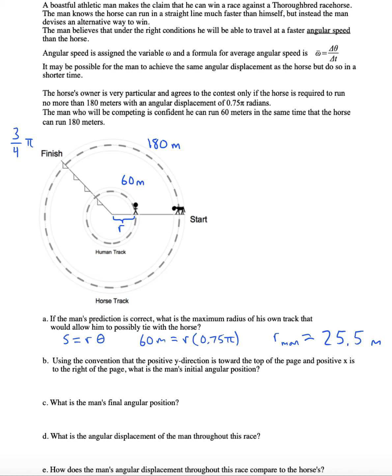Using the convention that the positive y direction is up toward the top of the page and the positive x direction is to the right, what is the man's initial angular position relative to a coordinate system where the origin is at the center of the circle? We want to give the man an initial angular position - call it theta i - it's 0, and we want to give him a final angular position as well. Now once he travels all this distance here, he's going to be located at an angle of three quarters pi.